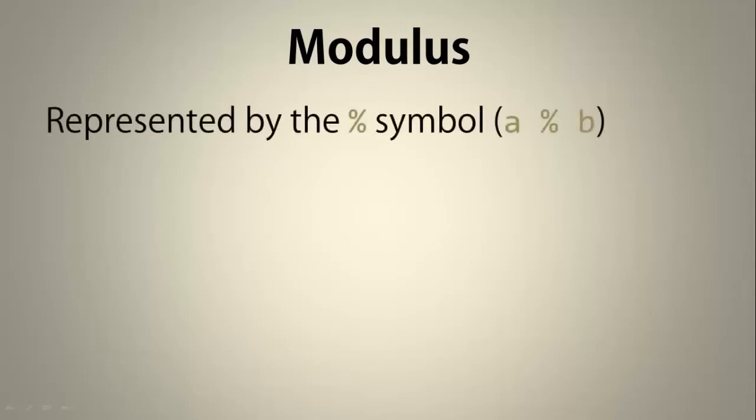First, I'm going to talk a little bit about the modulus function. It's represented by the percent symbol and returns the remainder when two numbers, A and B, are divided. The result will always be between 0 and B, where it can equal 0, but it cannot equal B.